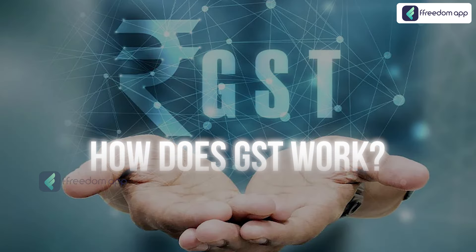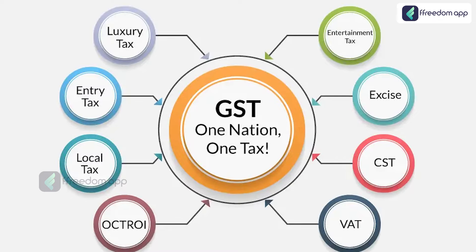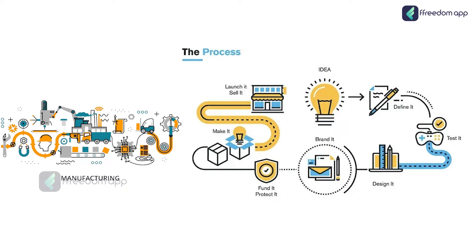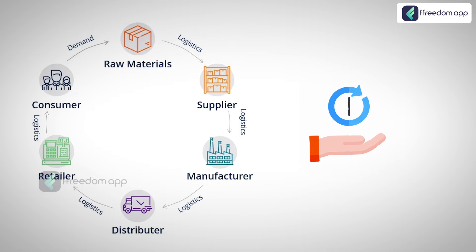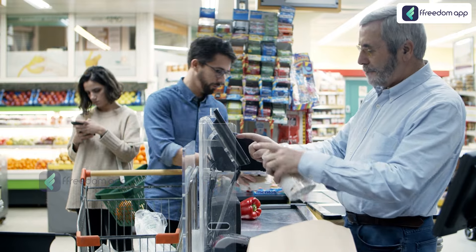Let's first understand how GST works. GST is structured as a destination-based, multi-stage tax that is levied at each point of sale. The tax is collected at every stage of the production process but is refunded to all parties in the supply chain other than the final consumer.